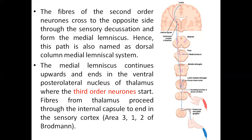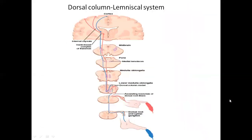In the thalamus, the second order neurons end. From the thalamus, the third order neurons start and fibers proceed through the internal capsule to end in the sensory cortex, that is area 3, 1, 2 of Brodmann. So in the dorsal column lemniscal system: first order neurons ascend in the posterior column; second order neurons cross through sensory decussation forming the medial lemniscus; and third order neurons from the thalamus finally relay to the sensory cortex.